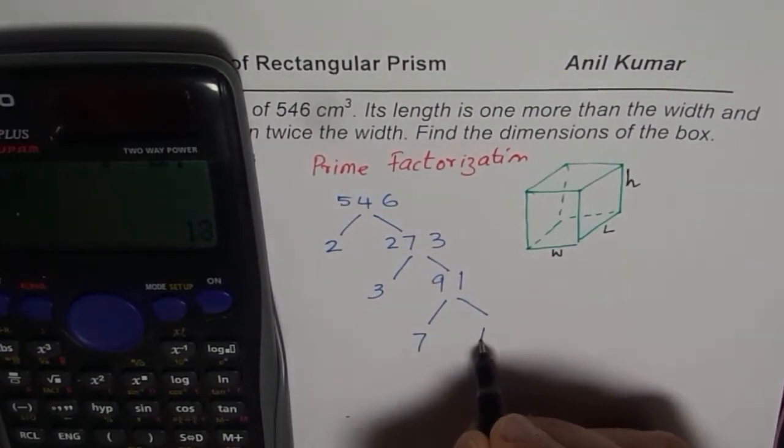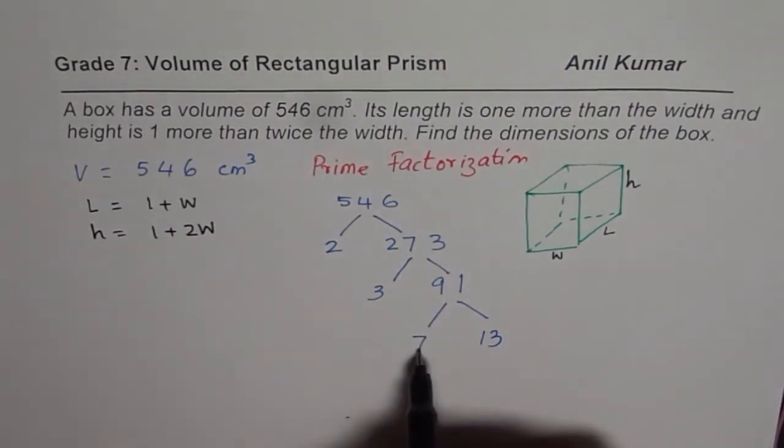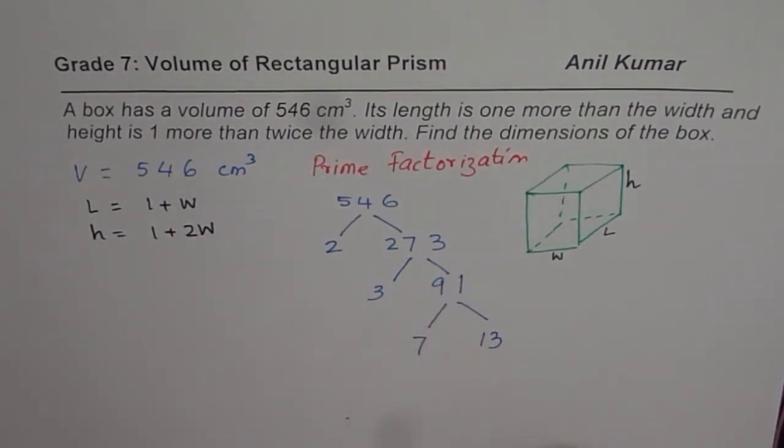So 7 times 13 is 91. It is very important to remember this. 7 times 13 is 91.